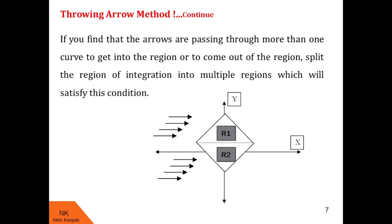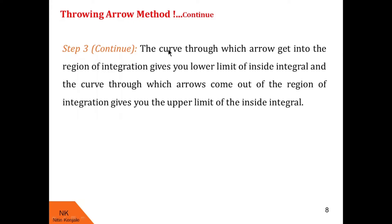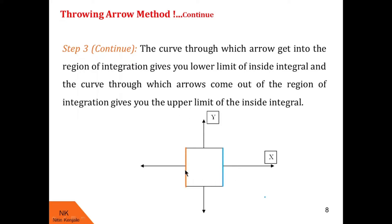Now after this, we note down the lower and upper limits for the inside integral. We take the equation of the curve through which the arrows get into the region — this curve gives us the lower limit of the inside integral. Similarly, the equation of the curve through which the arrows come out of the region gives us the upper limit of the inside integral. For example, when we throw arrows parallel to the x axis, the curve they cross to enter gives the lower limit, and the curve they cross to exit gives the upper limit.